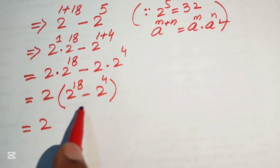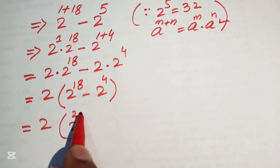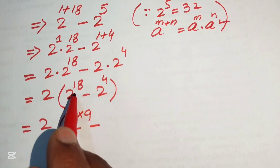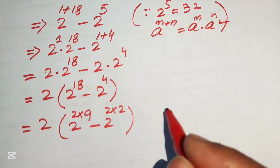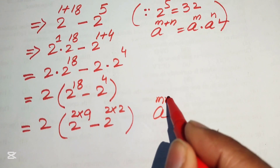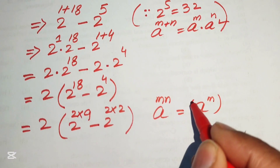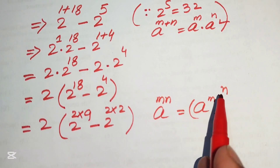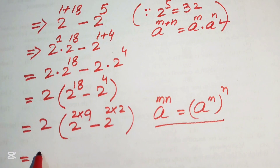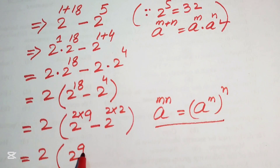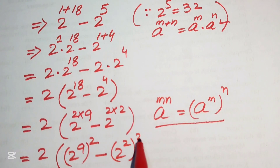Here we rewrite 2 to the power of 18 as 2 to the power of 2 times 9, and we write 2 to the power of 4 as 2 to the power of 2 times 2. We again apply the exponential law: if you have a to the power of m·n we write it as a to the power of m, to the power of n. So these terms are written as 2 to the power of 9 whole squared minus 2 squared whole squared.